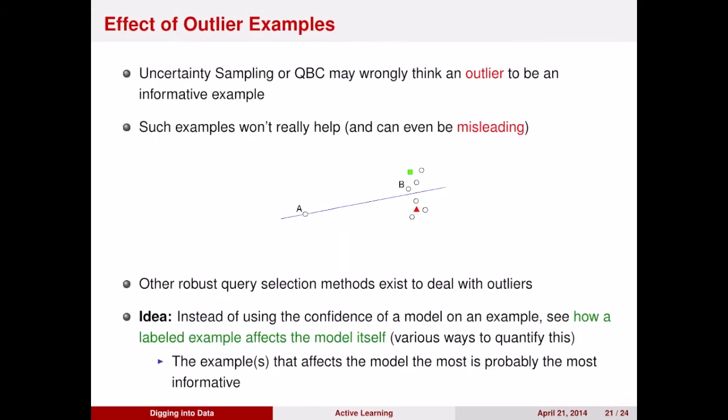One problem with query by committee is that it focuses on outliers. So outliers are hard to classify, but they're not very typical of standard examples.